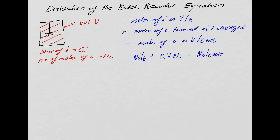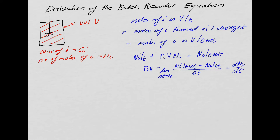We can now rearrange this and it starts looking like a differential form. Dividing by Δt and taking the limit as Δt tends to zero, this just becomes dNi/dt.